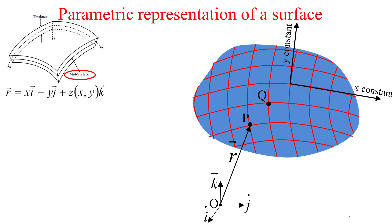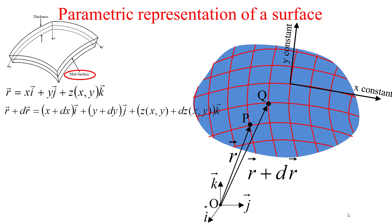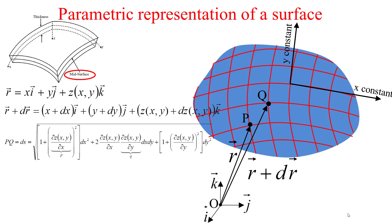Now consider a point Q as the intersection of neighboring parameter curves. The position of Q in space is determined by the position vector R plus dR, where dR is an infinitesimal variation of R. So R plus dR equals (X + dX) along I, (Y + dY) along J, and (Z + dZ) along K, where Z is always a function of X and Y.